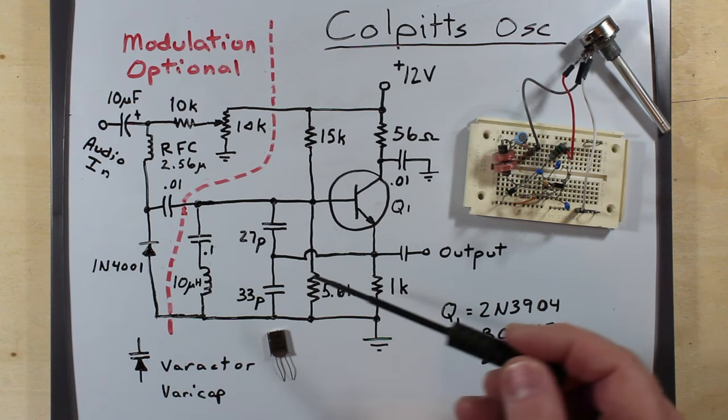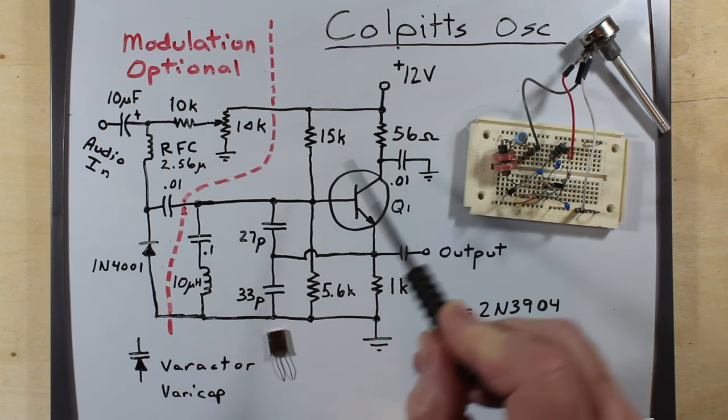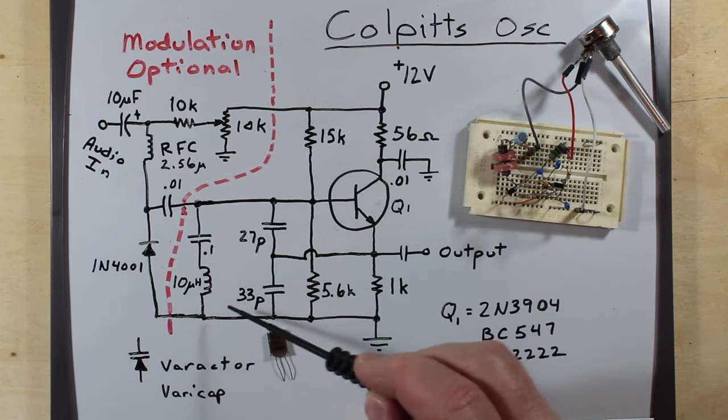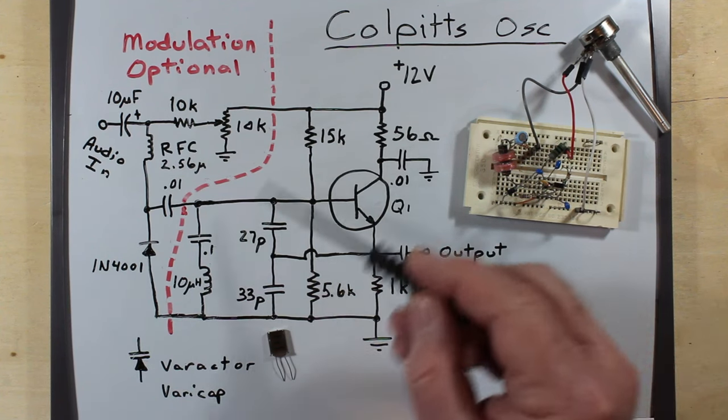9.2 and nothing else had really changed. So it was really nice with the Colpitts that I found a number of times is quite a range in here of what you could put in the tank circuit and this thing will still oscillate without having to fiddle around with all these other things.